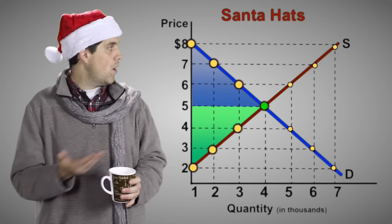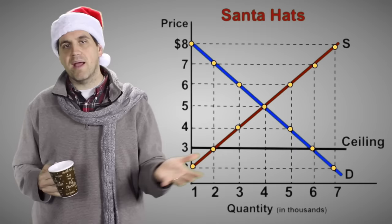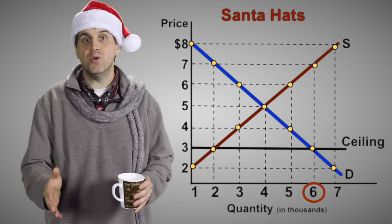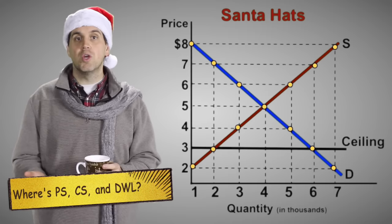But what happens when a market's not at equilibrium? Let's say the government establishes a price ceiling at $3. At that low price, consumers want to buy 6,000 units, but producers are only going to produce 2,000 units. That's called a shortage and the result is dead weight loss. Pause the video — see if you can figure out where's producer surplus, consumer surplus, and this new thing called dead weight loss.